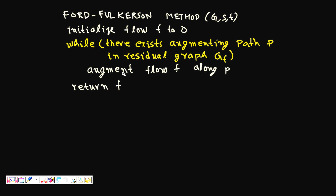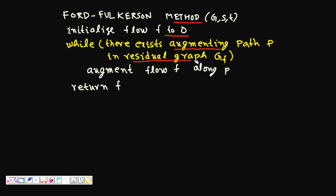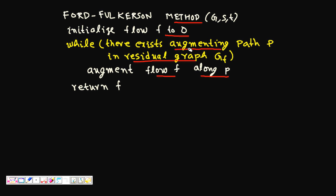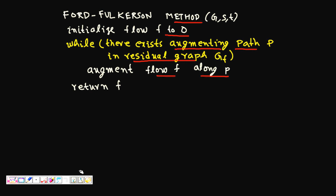The Ford-Fulkerson method takes the flow network, the source, and the sink as input. Initialize all flows on all edges to zero. Then run a loop: while there exists an augmenting path p in the residual graph G_f, augment flow f along p. This introduces two key new terms: augmenting path and residual graph.